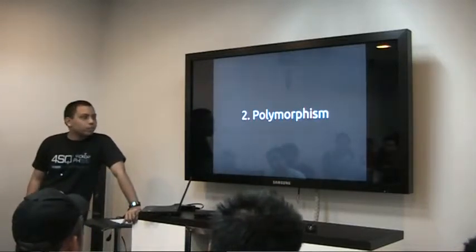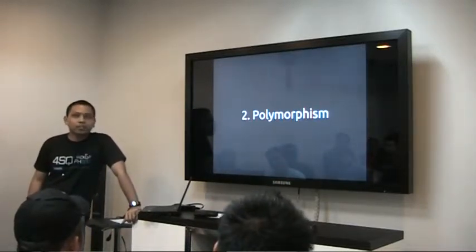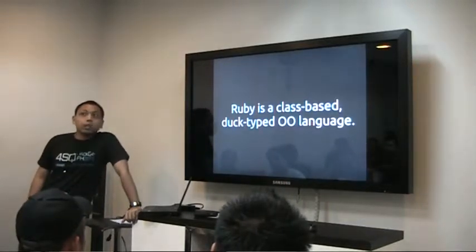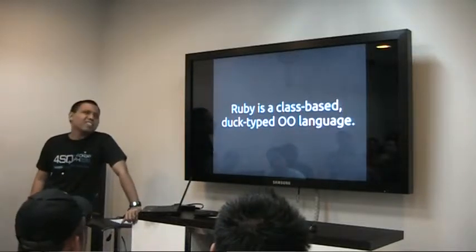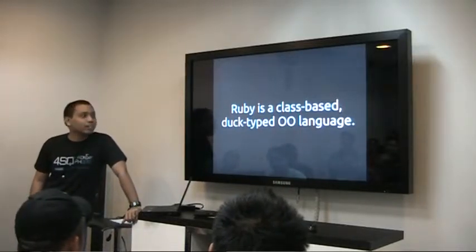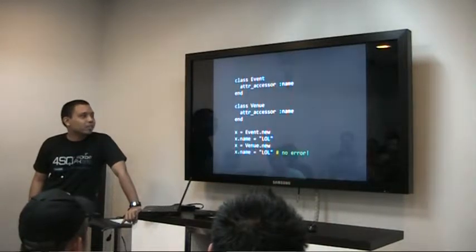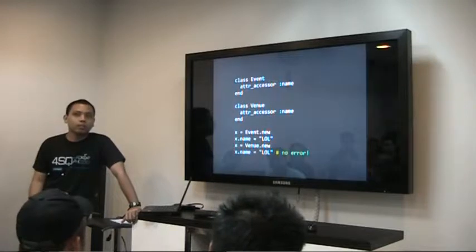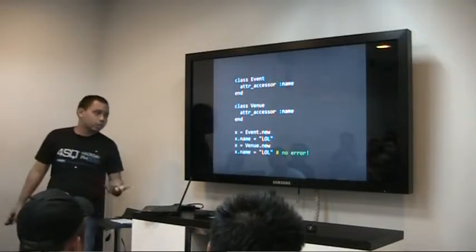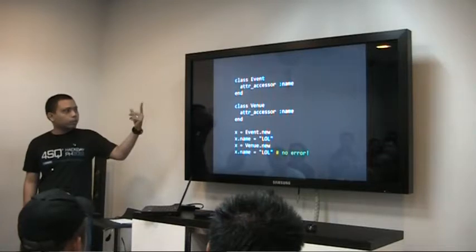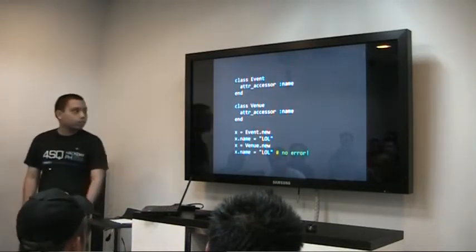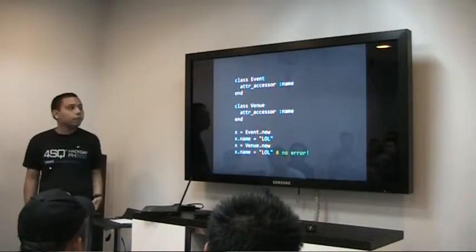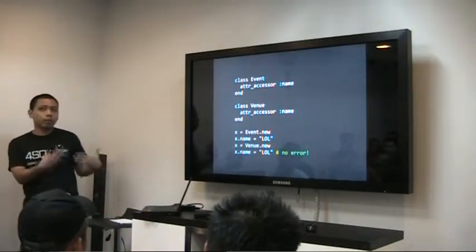The other thing mentioned in the suggestions was polymorphism. Again, because Ruby is dynamically typed, polymorphism isn't that exciting — you can just create two independent classes as long as they have the same method signature, and you can call that method signature anywhere. For example, in the PinayRB site they have a class Event and a class Venue, and they both have a name.